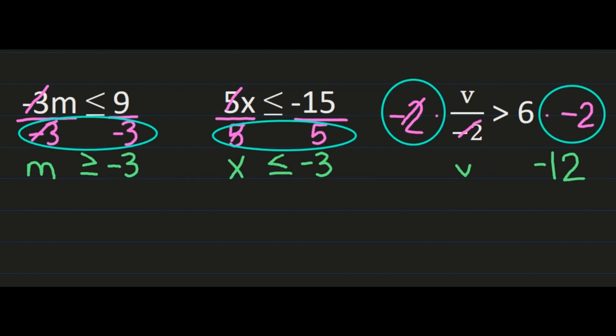Let's take a look at the step we just took: we multiplied both sides by a negative. Because we multiplied both sides by a negative, we have to flip that inequality sign. So we have v is less than negative 12.